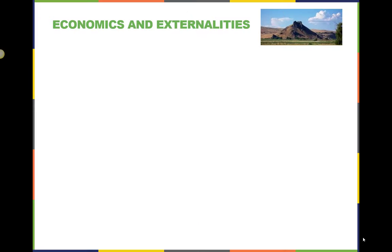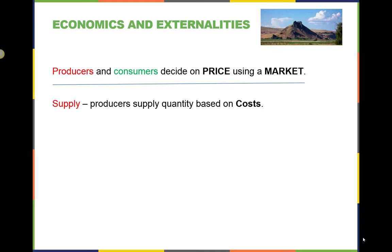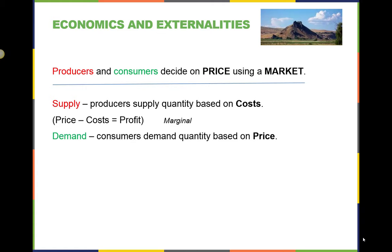In economics, we learn about markets, which is where buyers and sellers of goods and services meet and exchange goods and services for a negotiated price. The sellers, or producers, of a good or service supply the market with a good or service and receive the market price. If we subtract the cost of production from the price, we get the profit made by the producer. Buyers come to the market demanding goods and services and are willing and able to pay a certain price for what they want. This price they are willing and able to pay may be more or less than what the sellers are willing to sell for.